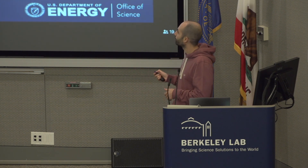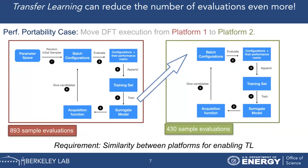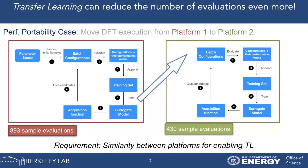Do we really need to run a fresh search each time we have a new platform? Thanks to transfer learning, we can reduce the number of evaluations even more. Transfer learning is a technique in machine learning that allows you to reuse a previous model when training a new model, so the training of the new model is accelerated. In our case, we use the model trained on Cori during the search on Perlmutter, so the search is not starting from scratch — it has previous information and is accelerated. Using transfer learning, the search only took 430 evaluations.